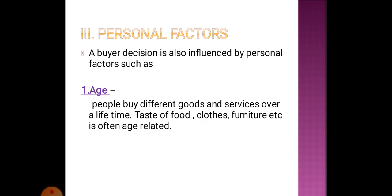People buy different goods and services according to different age criteria. As you all are in your teenage years, you prefer some different goods and services compared to your parents. Your parents prefer different goods and services compared to their parents, and grandchildren prefer yet other goods and services. So as age increases, our taste in food changes, clothing changes, requirements for furniture change, and status changes — everything changes according to age.